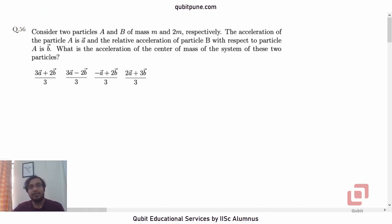Consider two particles a and b of mass m and 2m respectively. The acceleration of particle a is a bar and the relative acceleration of particle b with respect to particle a is b bar. It is not the absolute acceleration of b that is given to us but the relative to a acceleration is given. What is the acceleration of the center of mass of the system of these two particles?